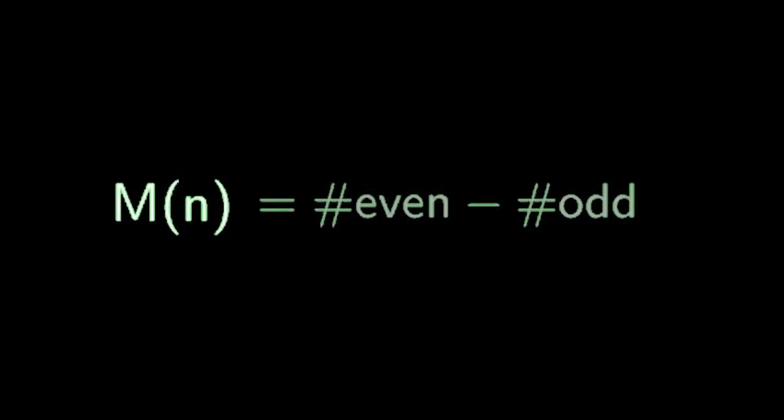The Mertens function M is defined by counting all the numbers below N with even prime factors and subtracting all those with odd prime factors.